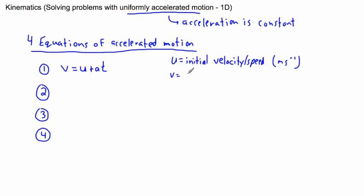V is your final velocity or speed. That's also measured in meters per second.